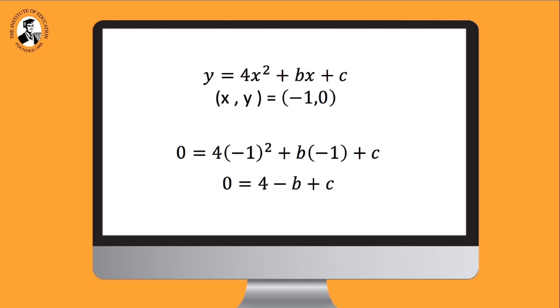We're going to deal with our second point now. So our second point is minus 1, 0. Again, the x value is minus 1 and the y value is 0. And we're going to sub it into our equation. So 0 is equal to 4 times minus 1 squared. Make sure brackets go around that minus 1. Plus b times minus 1 plus c. Again, some tidying will give us 0 is equal to 4 minus b plus c.